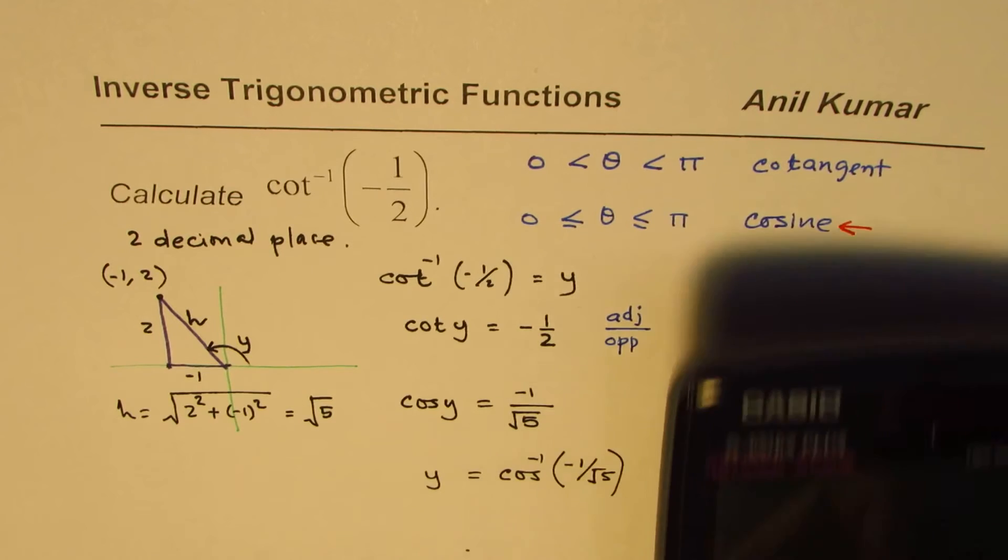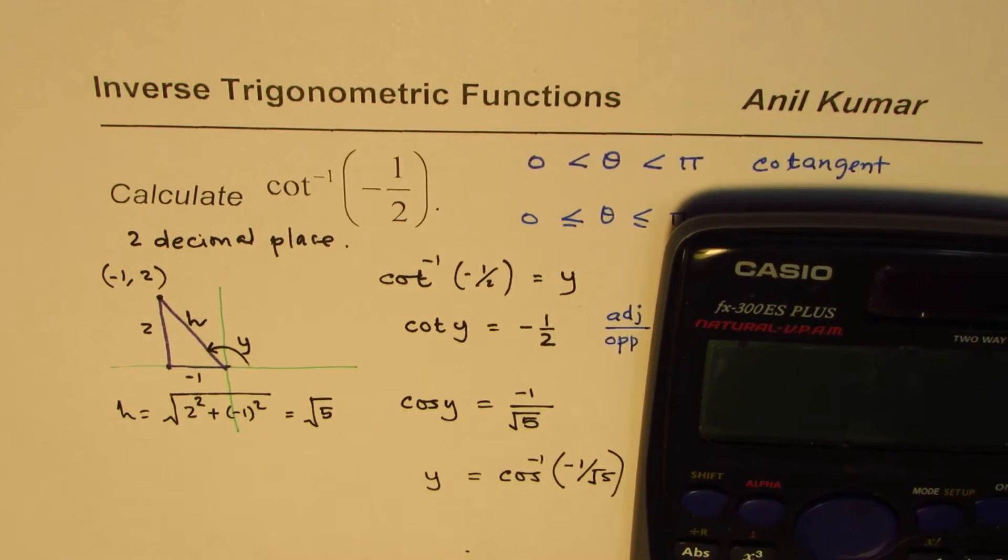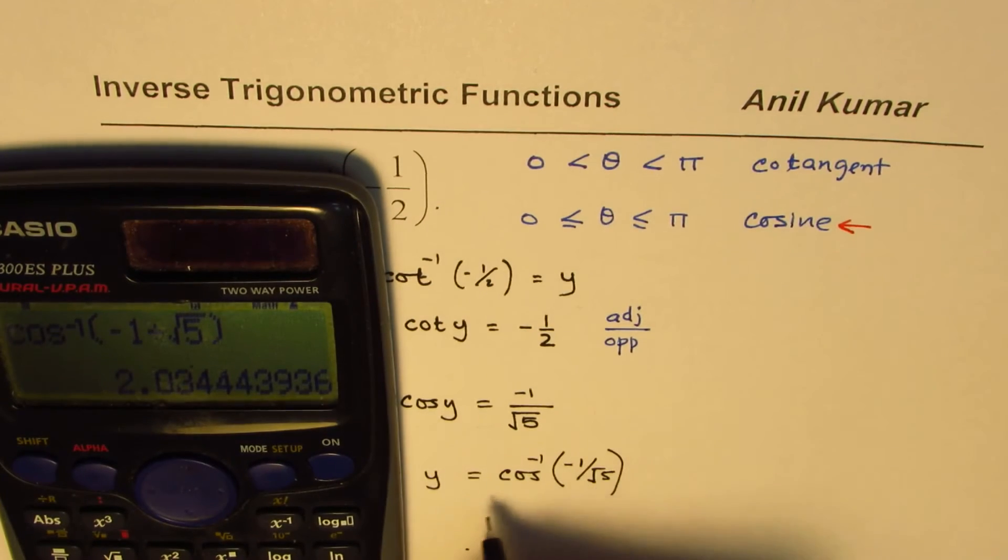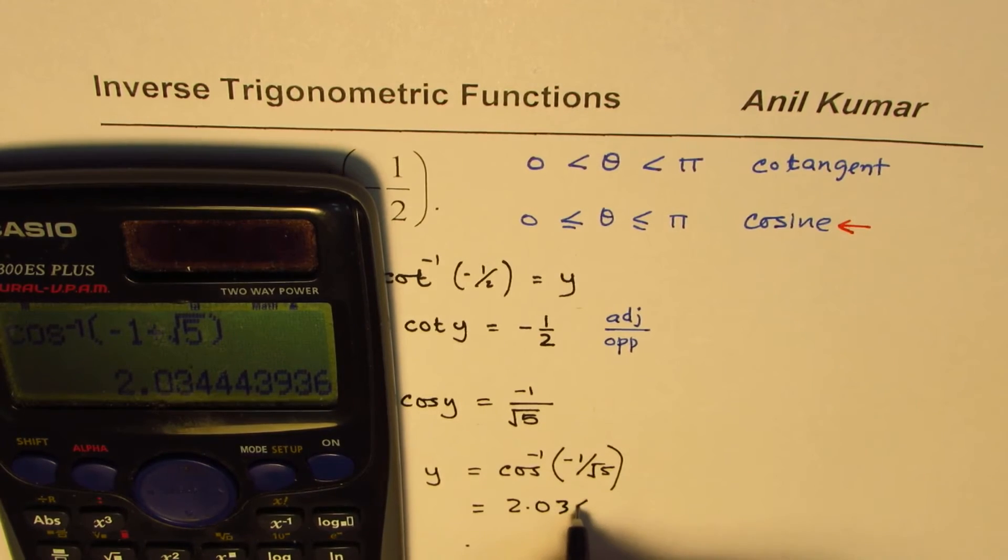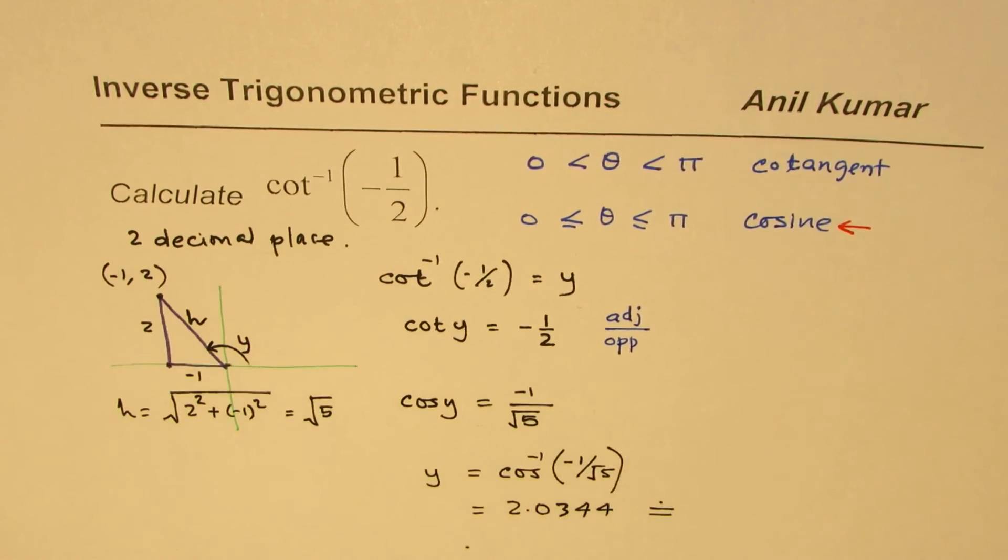Let me use the calculator now to find this answer. We have shift cos inverse, bracket negative 1 divided by square root of 5, bracket close, equal to. The calculator should be in radians. Remember that part. So, we get an answer which is equal to 2.0344, rounding to two decimal places. That is what we wanted.